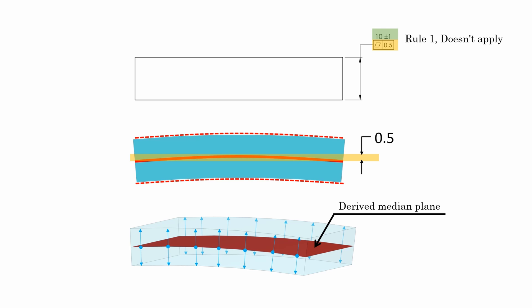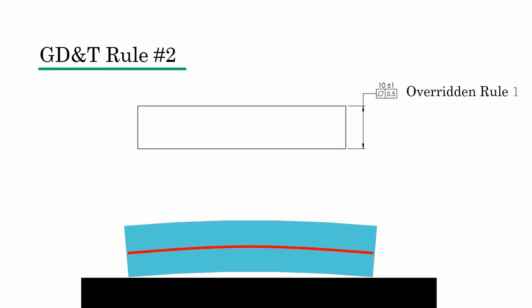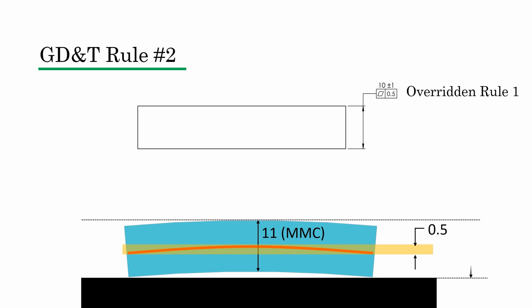Rule 1 doesn't apply here. Instead, rule 2 takes precedence. The flatness tolerance is applied regardless of feature size, even at MMC. Meaning even if the plate is at MMC — 11 mm — it can still have a flatness variation up to 0.5 mm. This means the actual envelope size could be 11 mm plus 0.5 mm flatness, totalling 11.5 mm. There is your answer — the perfect form at MMC requirement from rule 1 is overridden.